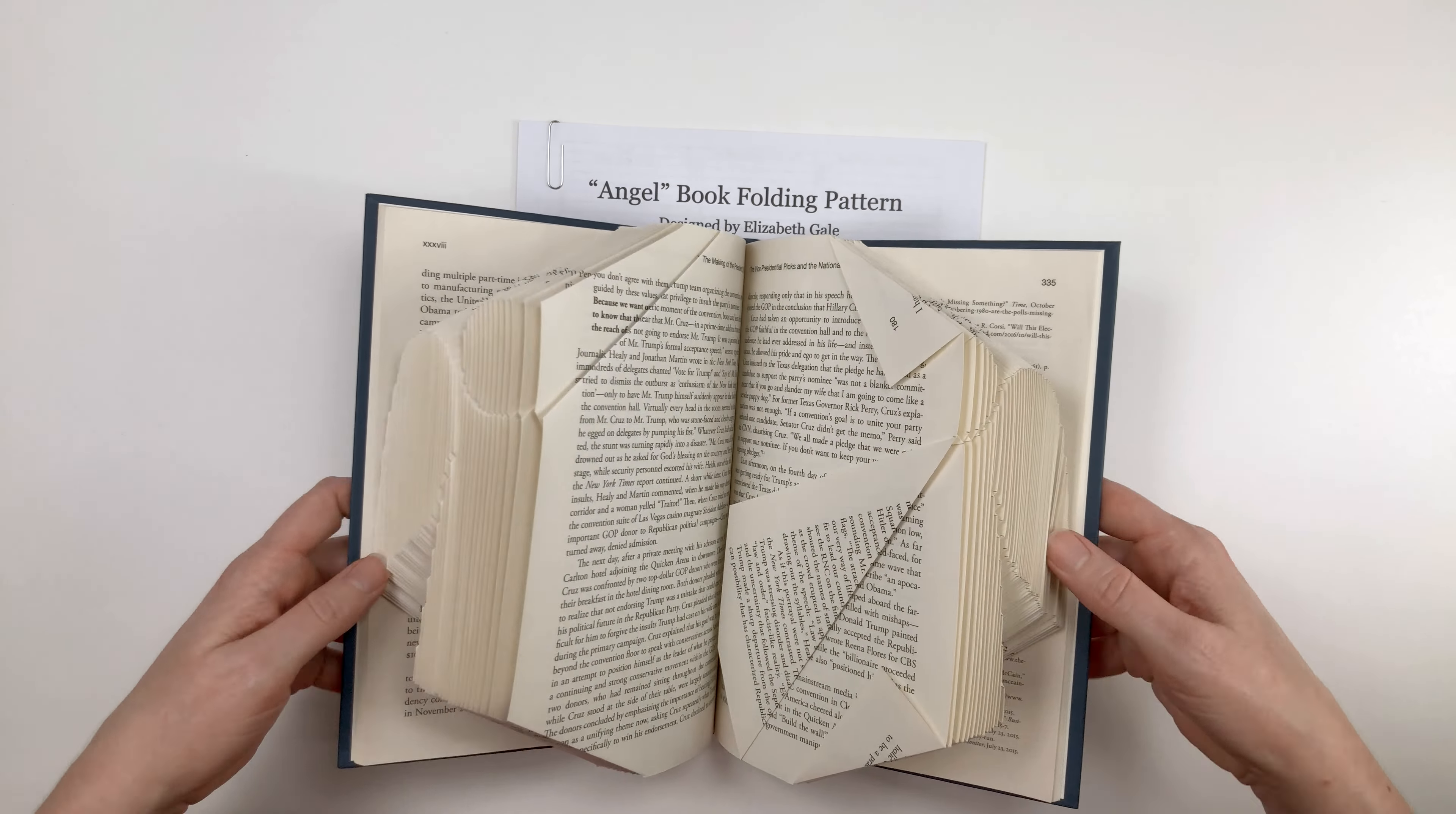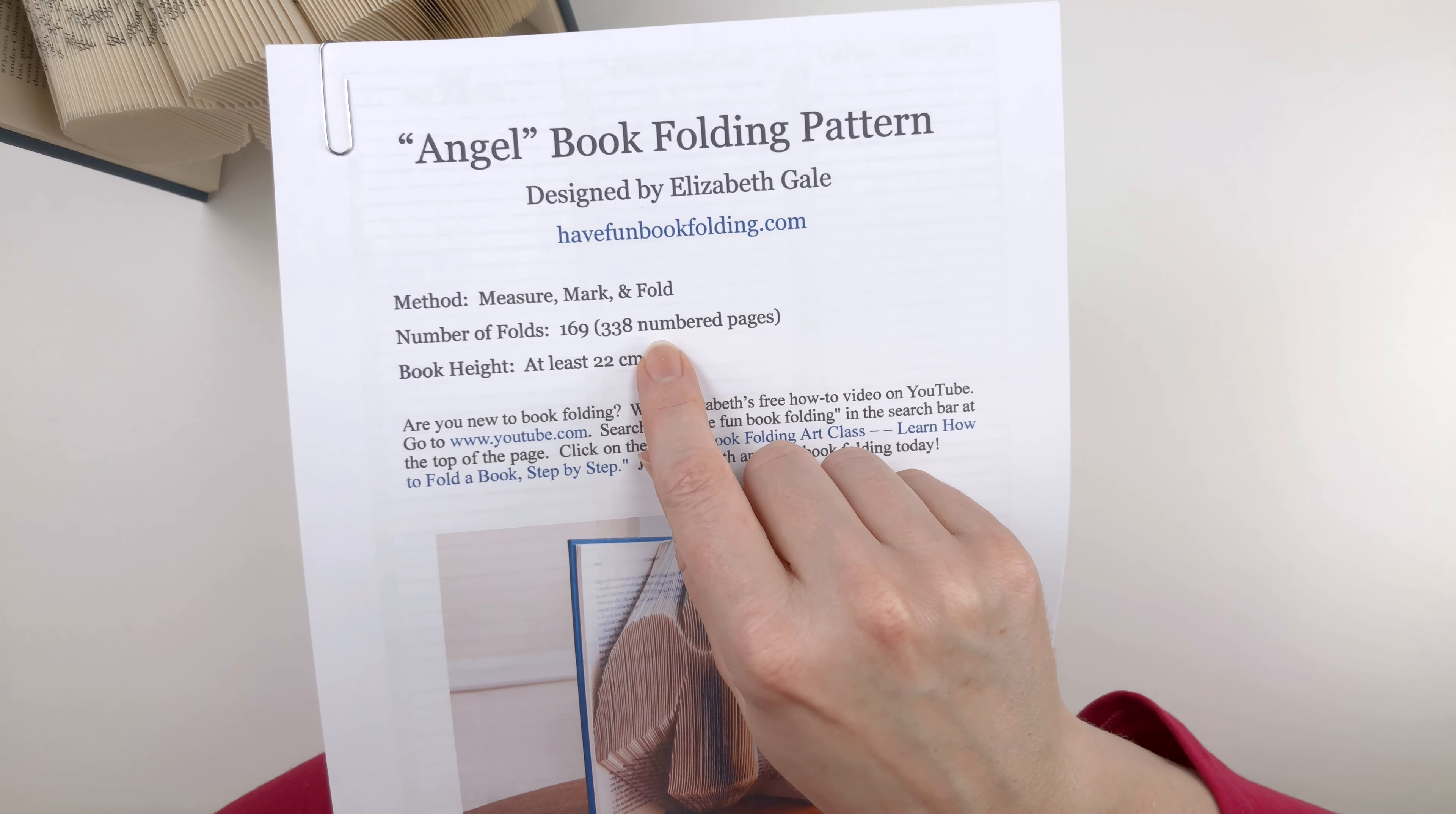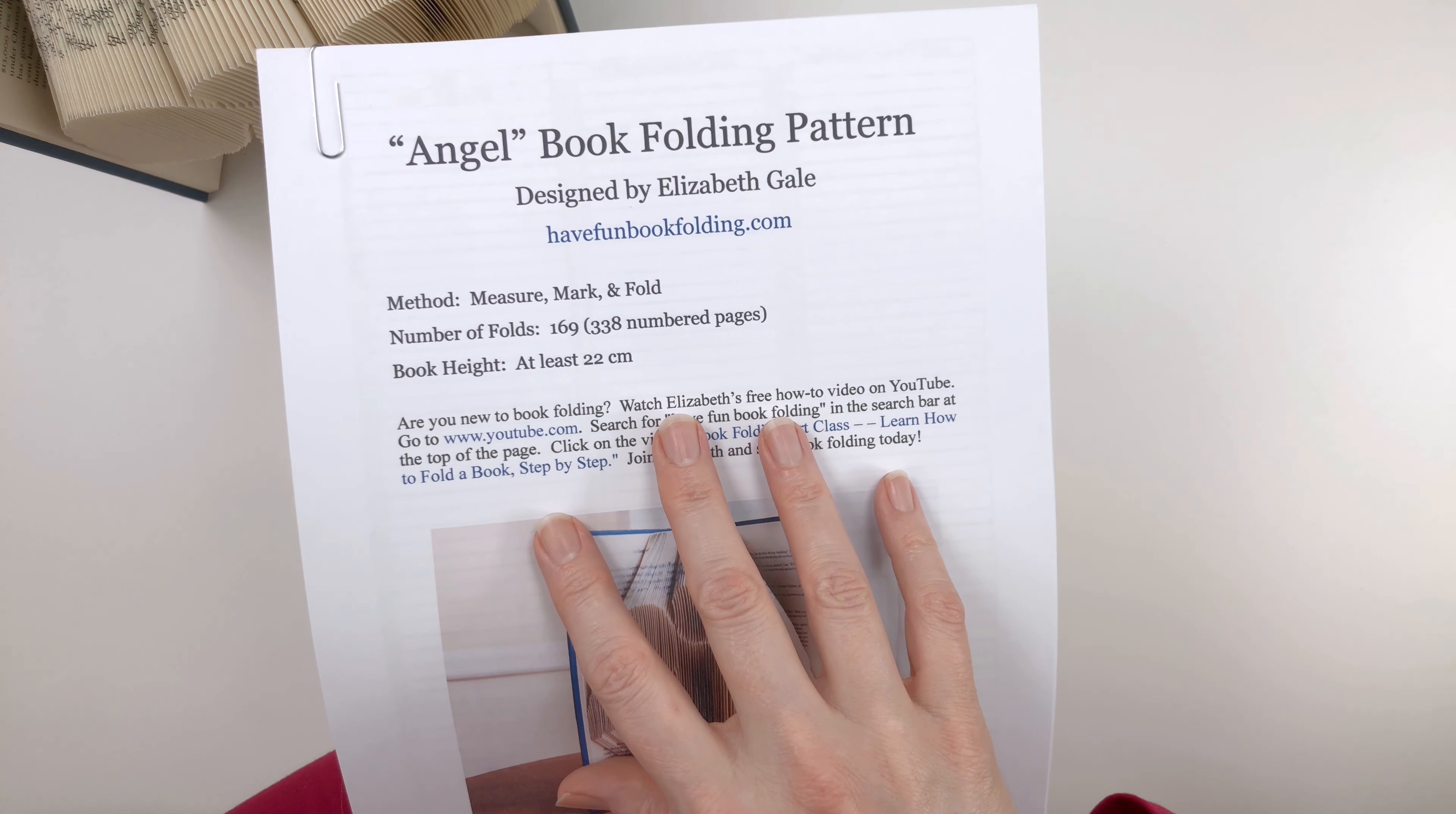So if we look back at our pattern, you can see that's why this is doubled here. 169 folds, sheets of paper, equals 338 numbered pages. So the pattern is telling us we need to use a book that has at least 338 numbered pages in it, so that the angel pattern will fit into that book.